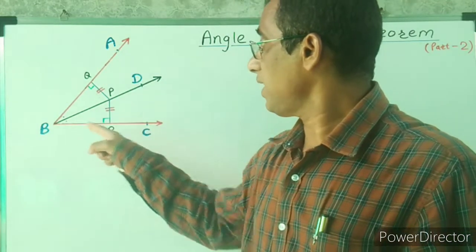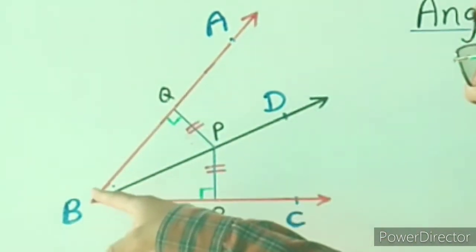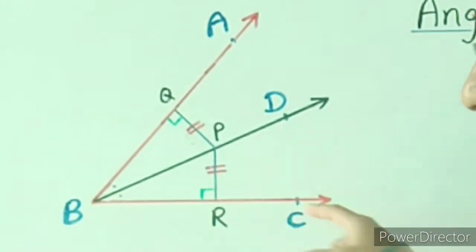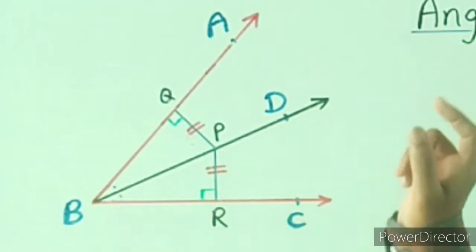Suppose ABC is an angle, P is any point equidistant from BA and BC. So we have to prove that P is on the bisector of this angle.